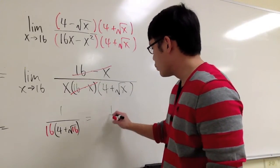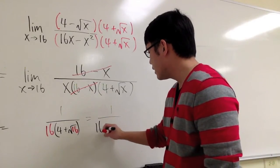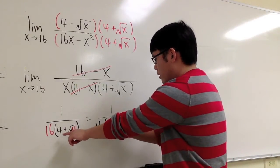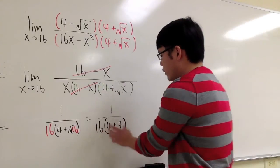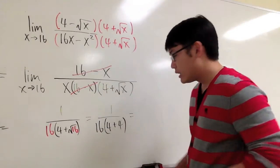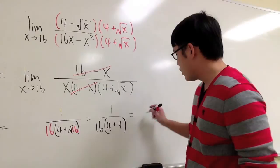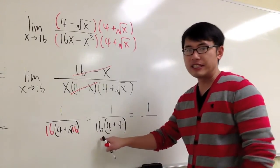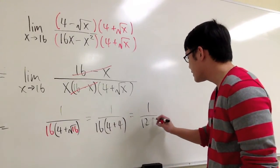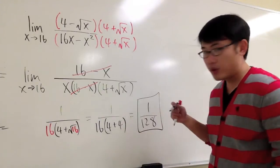And this is going to give us 1 over 16 times 4 plus 4, which is going to be 8 times 16 on the bottom. Altogether, 1 over 8 times 16, we have 128. And this right here will be the answer.